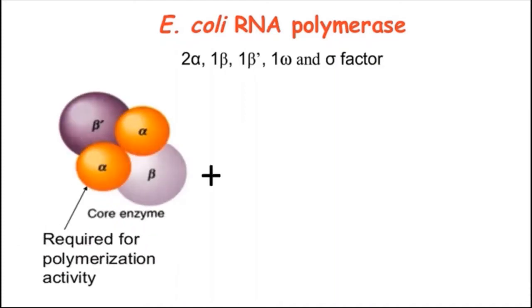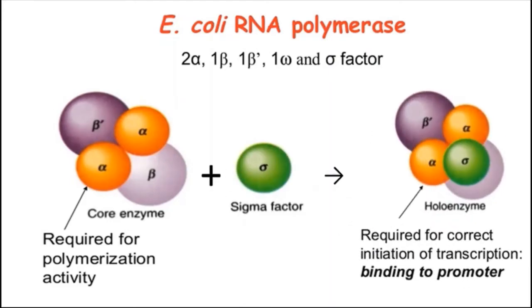A sigma factor binds to the core enzyme forming a holoenzyme. Sigma factor is responsible for initiation of transcription. After transcription starts, the sigma factor can unbind and let the core enzyme proceed with its work.